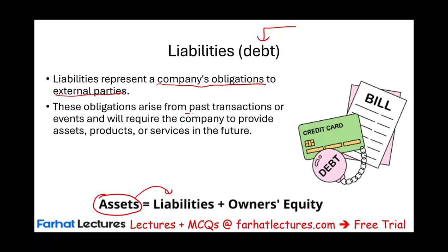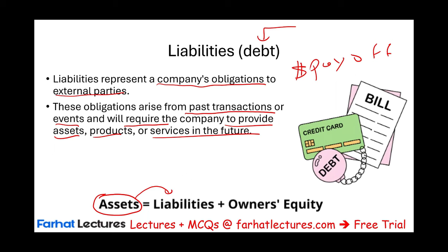These obligations arise from past transactions or events. When you have a liability, you are required to provide an asset, product, or services in the future. If you have a debt, you have to pay it off in the future — usually with cash. Certain debts you can settle by giving the debtor some product or service, but 99% of the time you pay off your debt with cash.